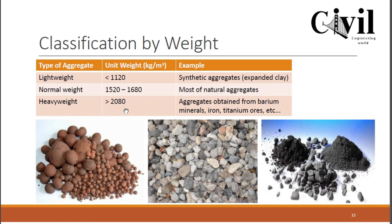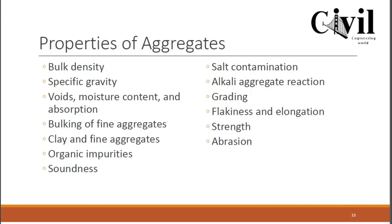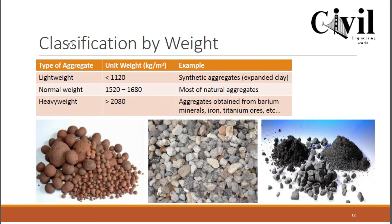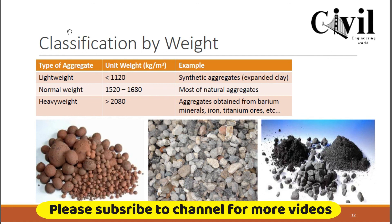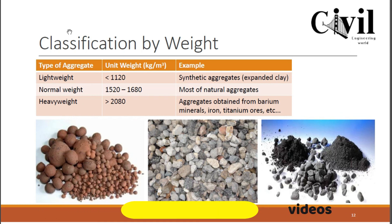The third type is heavyweight aggregates, having a unit weight greater than 2080 kg per cubic meter. These are high-density materials such as minerals of barium, iron, and titanium. In this video we have discussed the classification of aggregates on the basis of size, shape, weight, and physical characteristics.